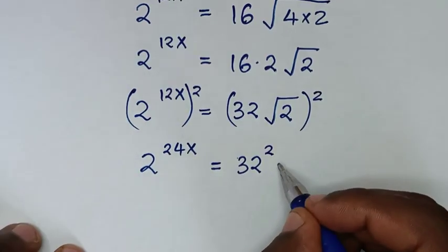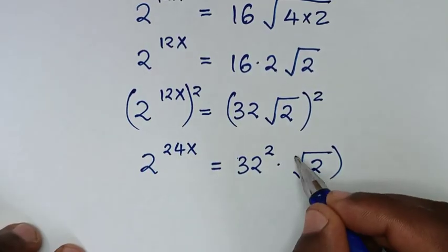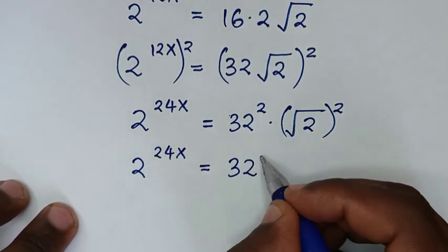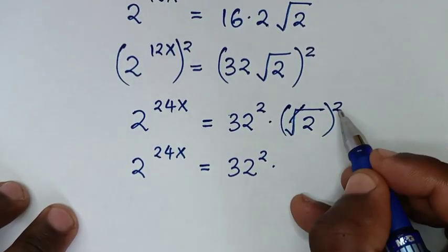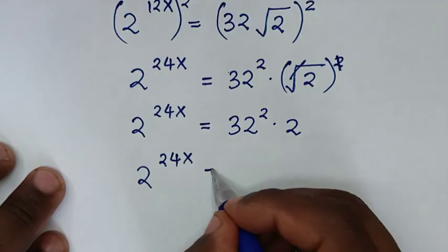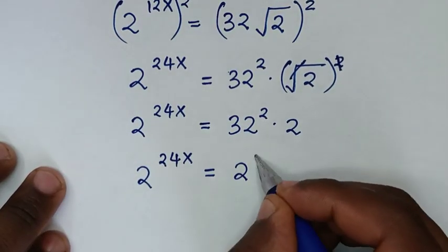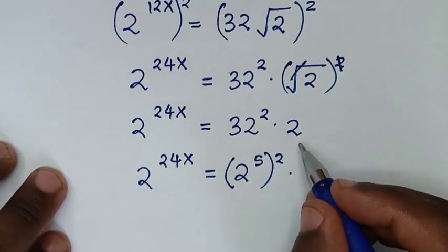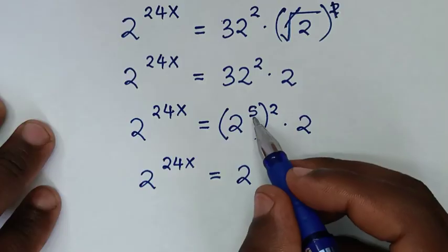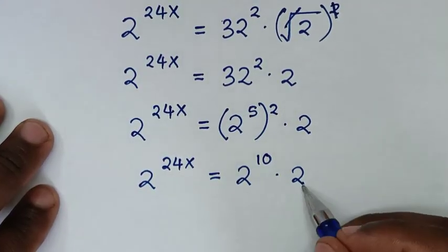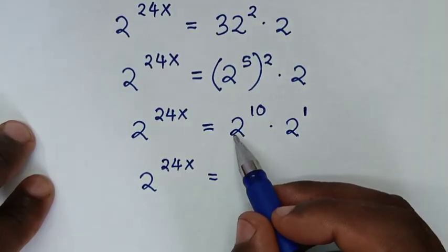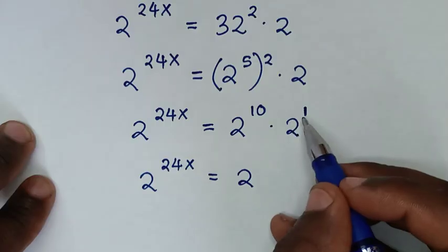The square root of 2 squared cancels to give just 2. So we have 2^(24x) = 32 squared times 2. Since 32 is the same as 2^5, we get (2^5)^2 times 2^1, which equals 2^10 times 2^1. Multiplying same-base powers gives us 2^(10+1), which is 2^11.